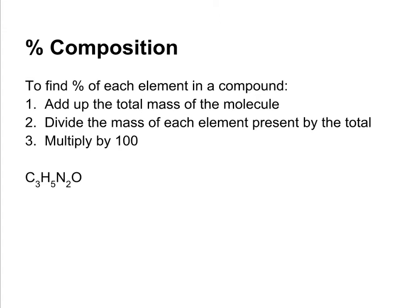Percent composition of a compound is easy. To find the percent of each element that's present in that compound, we just have to add up the total mass of the molecule, and then divide the mass of each element that's present by the total mass, and multiply it by 100.